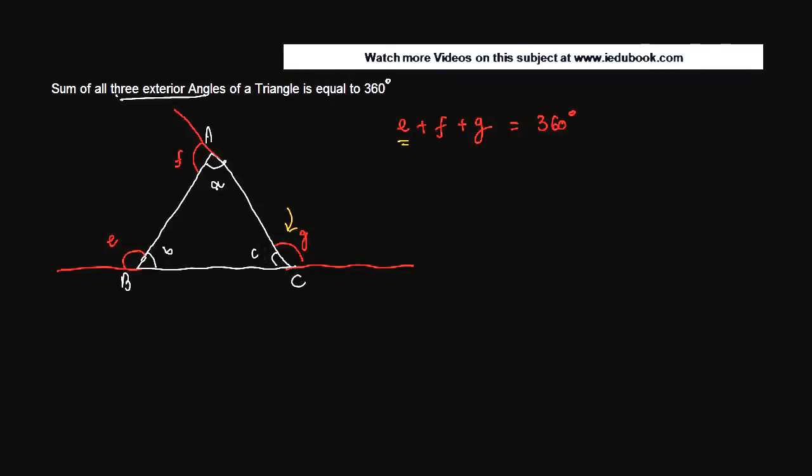Plus F. F can be written as what? Sum of two opposite interior angles, b plus c. Plus G. G can be written as sum of a plus b.